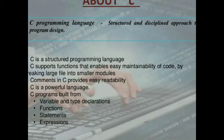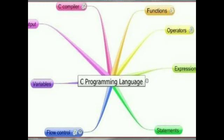C is a structured programming language. C supports functions that enable easy maintainability of code by breaking large files into smaller modules. Comments in C provide easy readability. C is a powerful language. C programs are built from variable and type declarations, functions, statements and expressions. C programming language consists of functions, operators, expressions, statements, flow control, variables, output and a C compiler.